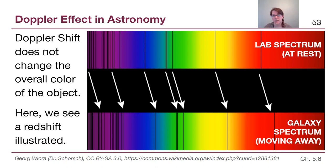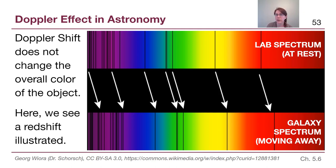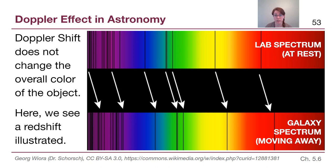If you look at the details in the textbook — and I strongly encourage you to at least look it over — there are equations we can use. The shift is not identical for every single spectral line, but the overall patterns will shift in a way we can visibly measure. That equation is useful to know about and is in the textbook, but because it's not part of our curriculum to do calculations with it, I'm not going to include it here in this video.